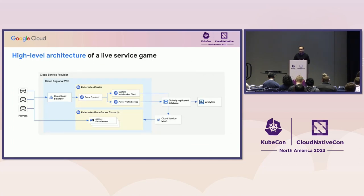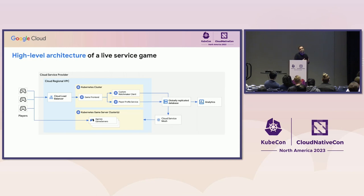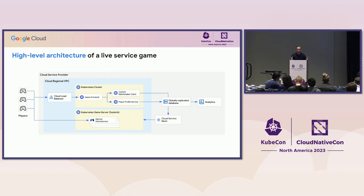This is what a high-level architecture of a live service game looks like. Players start in a lobby; a matchmaker directs them to connect to a dedicated game server for a shared multiplayer experience. The game front-end, matchmaking client, and player profile service can all run on Kubernetes clusters. Player profile metadata can write to a globally replicated database for analytics such as leaderboards. Game servers also run on Kubernetes clusters orchestrated by Agones. We now want to add generative AI inference servers with the game servers — so how do we deploy and connect them?